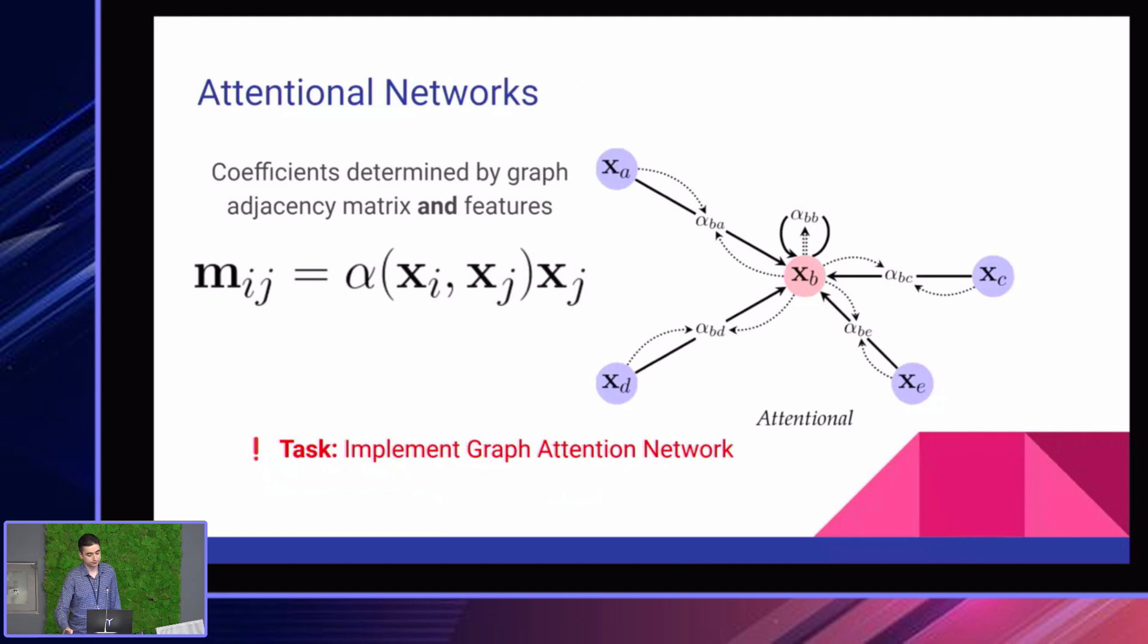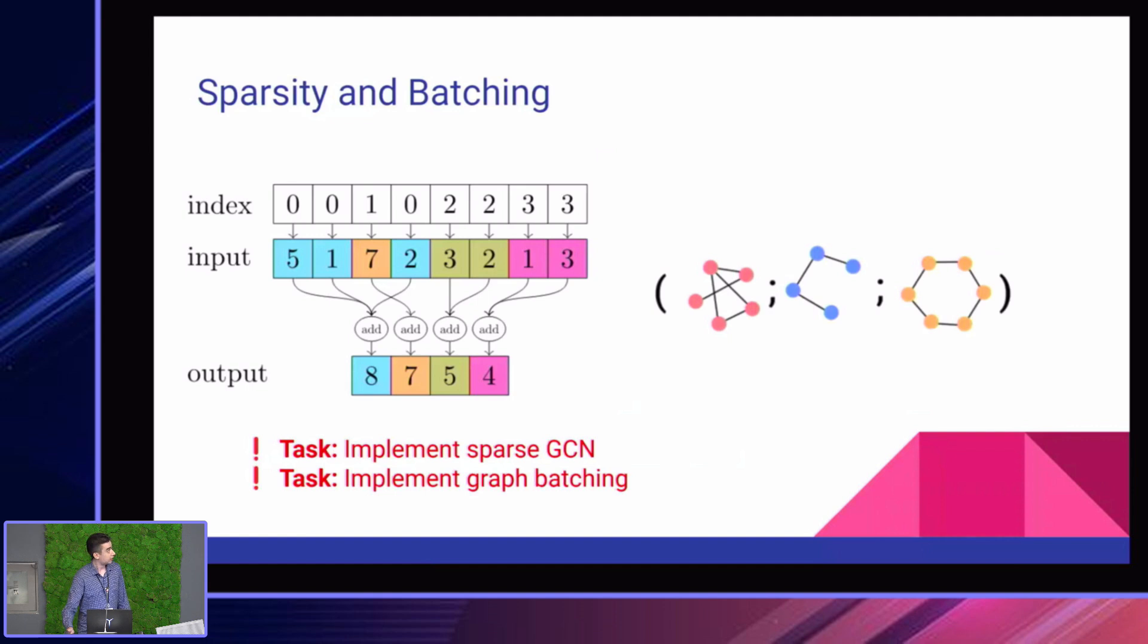Then we'll also work with attentional networks. So here we're still multiplying things by a constant, but now these constants also depend on graph features and not just on the adjacency matrix. And here you will implement something that will look a lot like the graph attention network by Veličković and others. And after this, we'll also look at what is different when you're training GNNs compared to when you're training something more classical like, say, MLPs. And there are two things that we'll work with. So first, we'll focus on sparsity. In order to save memory, we'll have to work with sparse data structures, and we'll use some primitives such as the one on the left called scatter sum.